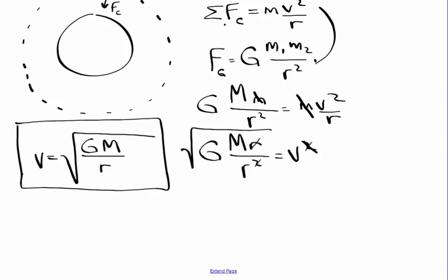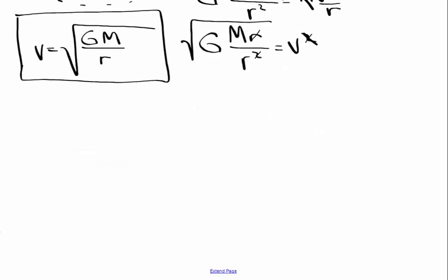Now, another equation that's helpful is an equation that looks at the time it takes to go around once, which we call the period of orbit. And the period of orbit can be gotten from the equation that we created over here by remembering that the speed of something that goes in a circle is 2 pi times the radius, in other words, the circumference, over the time it takes to go around once. I'm going to go ahead and put that in to this equation and solve for T.